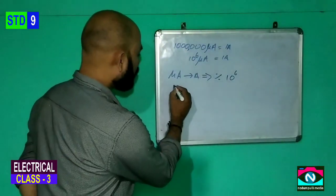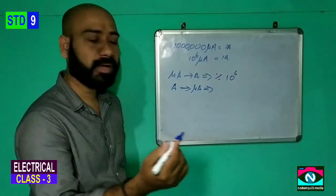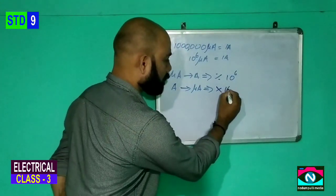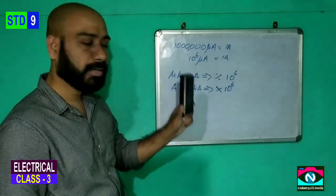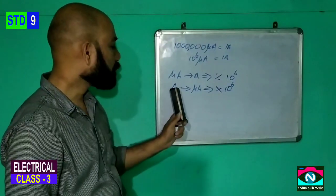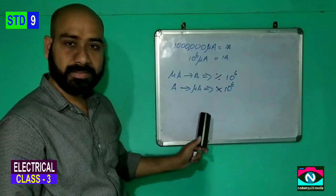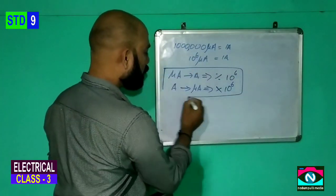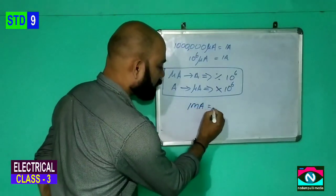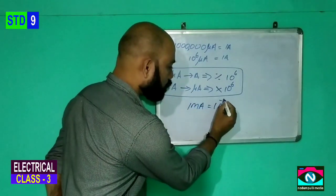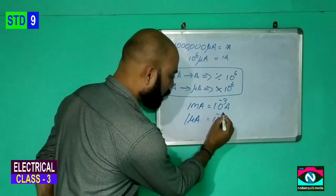This is the reverse. To convert Ampere into microAmpere, we multiply by 10 raise to 6. So Ampere to microAmpere: multiply by 10 raise to 6. MicroAmpere to Ampere: divide by 10 raise to 6.